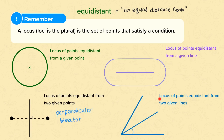Lastly, if I'm looking for the locus of points equidistant from two given lines, so I've got my two given lines here, and I'm interested in each point being an equal distance from either line.